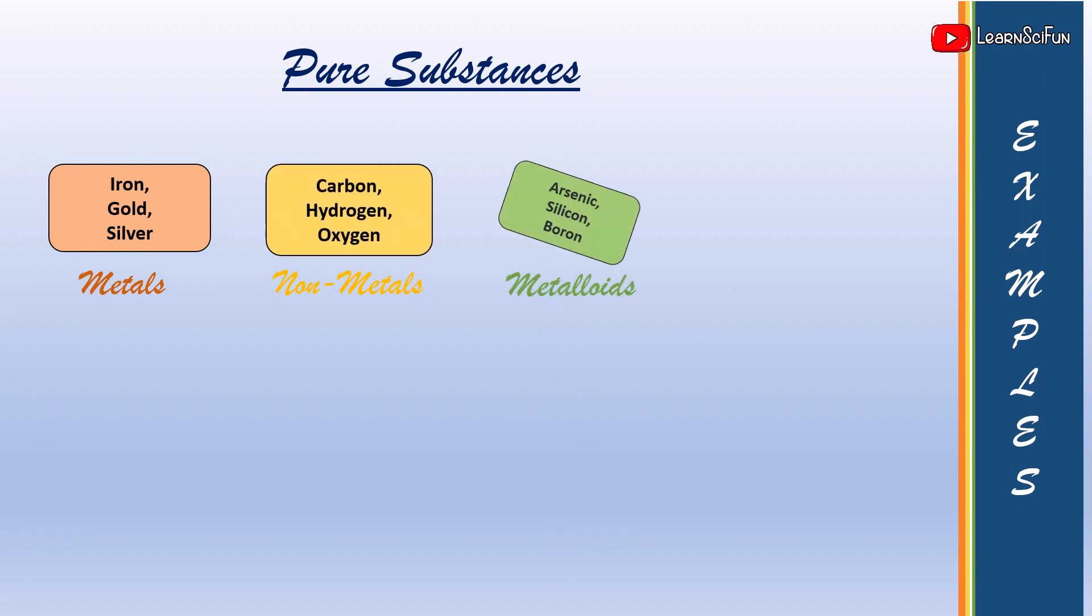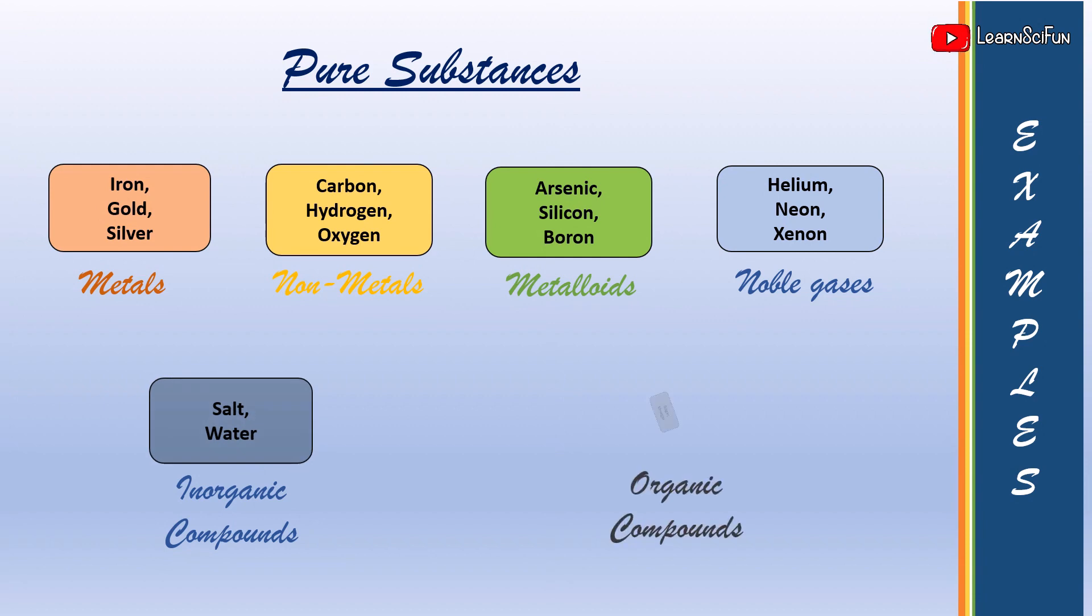Moving on to examples, we see that metals, non-metals, metalloids, noble gases, inorganic and organic compounds, they are all pure substances.